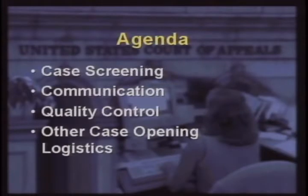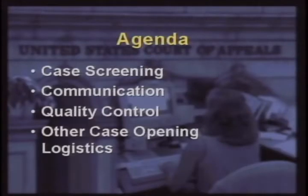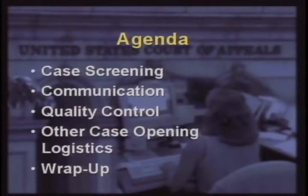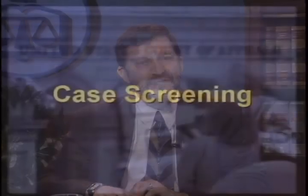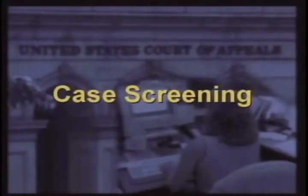Finally, our last panel is kind of a catch-all we're calling other case opening logistics. Among the topics here we'll be dealing with are pro se appellants, second or successive applications, and so forth. We'll end up with a little wrap-up at the end. Let's turn to our first discussion on case screening. In opening each discussion, we'll sort of set the stage with a short video that we made when we visited the Fourth Circuit Court of Appeals in Richmond, Virginia.